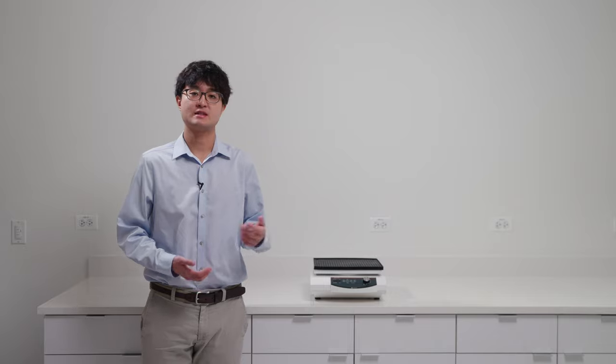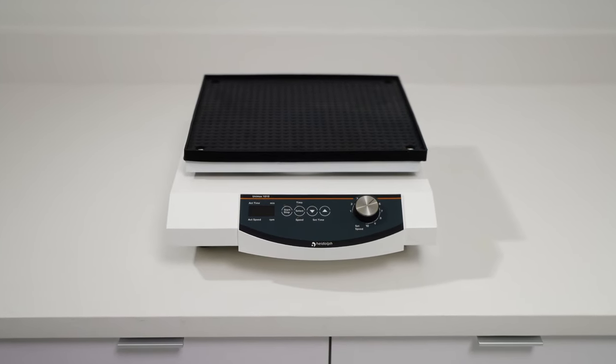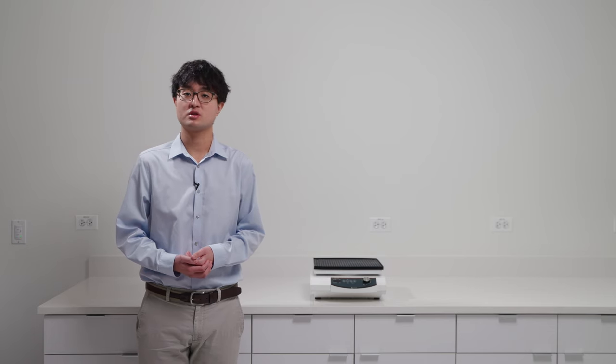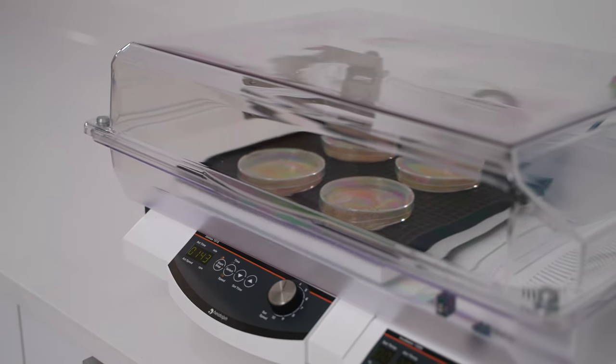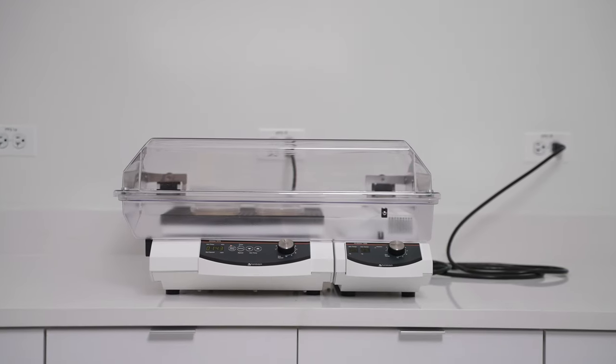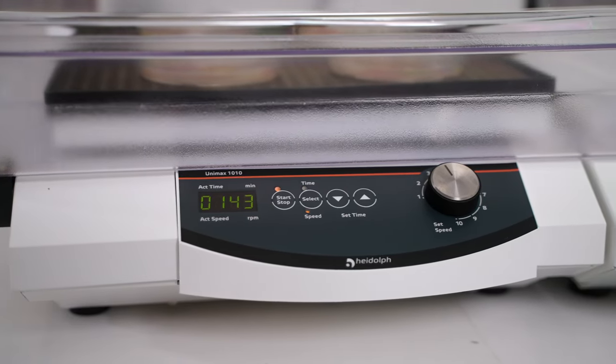If you want something more robust, then we have the Unimax series. The Unimax series comes with two models. Our base model, called the Unimax 1010, comes with temperature control capabilities as it can be converted into an incubator through our incubator accessory. This transforms a regular platform shaker into a platform shaker that is able to do temperature control tasks.